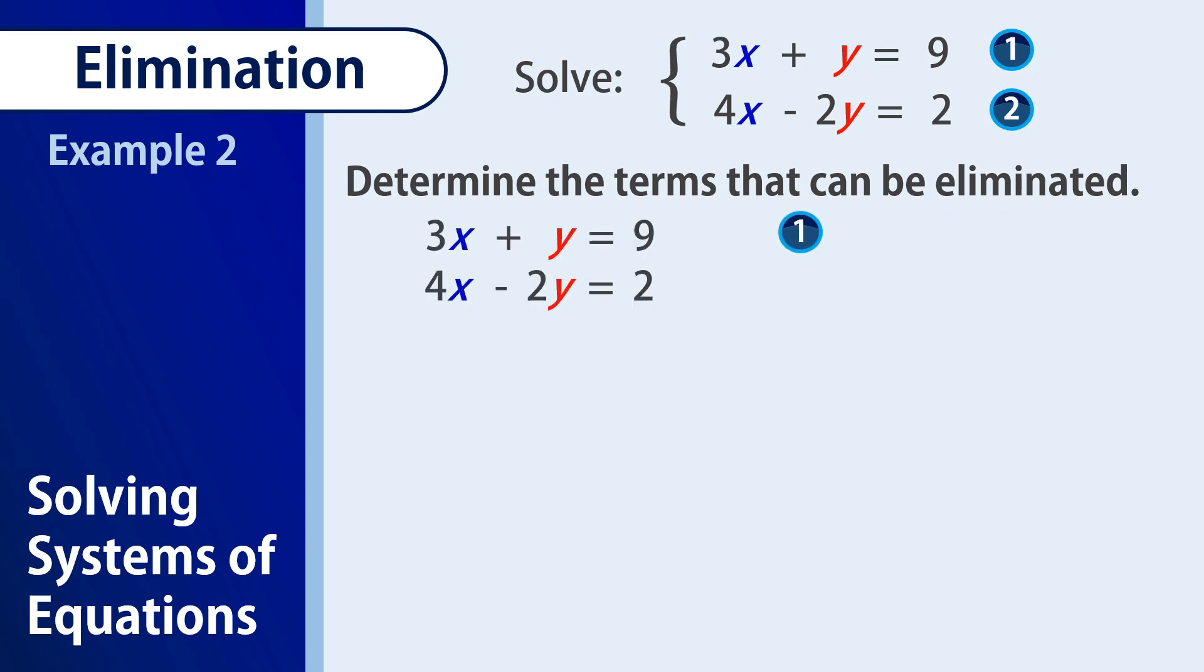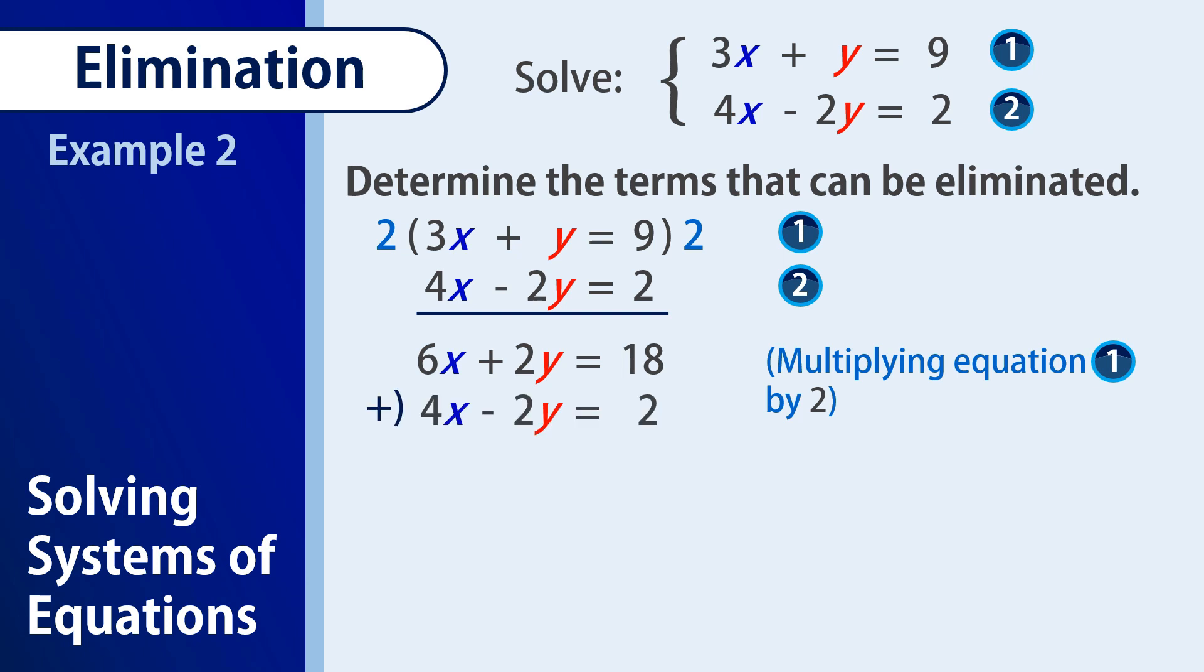So what we will do is we have to consider multiplying a specific number to any of this equation to make their coefficients equal. In this case, we will be using equation 1. We multiply 2 to equation 1 so that that becomes 6x plus 2y equals 18, that would already have the same 2y in our second equation.